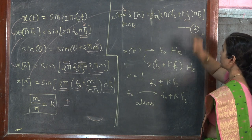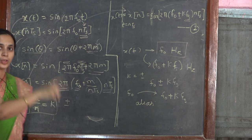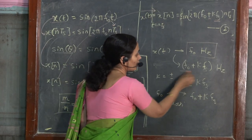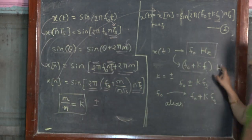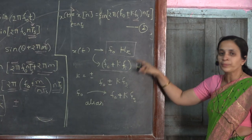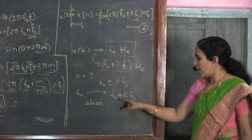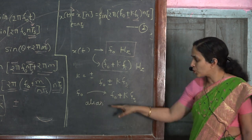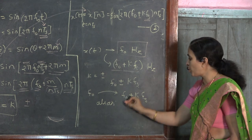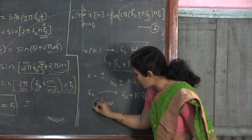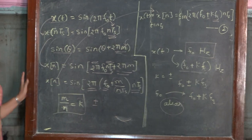So the equation becomes x of n equals sin(2π(f₀ ± k·fs) · nTs). The signal which was earlier represented by frequency f₀ Hz is now equivalently represented by a signal which holds frequency f₀ ± k·fs. So the same continuous time signal, when it comes into its digital form, is represented by the other frequency. This particular f₀ is called an alias of f₀ ± k·fs, or vice versa. This concept was also discussed earlier in its graphical form.